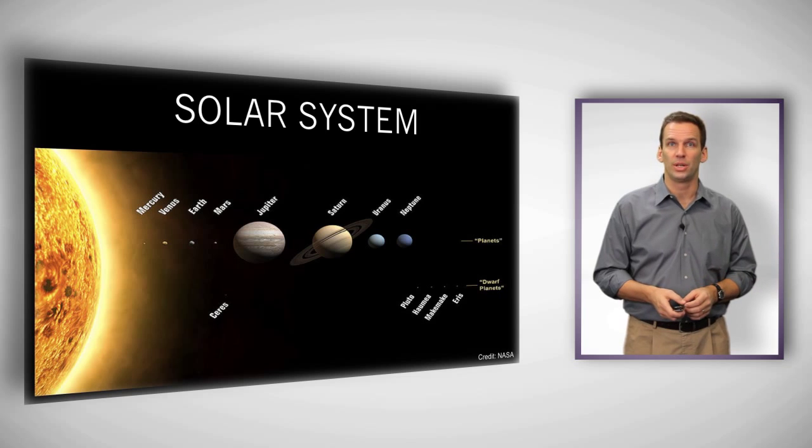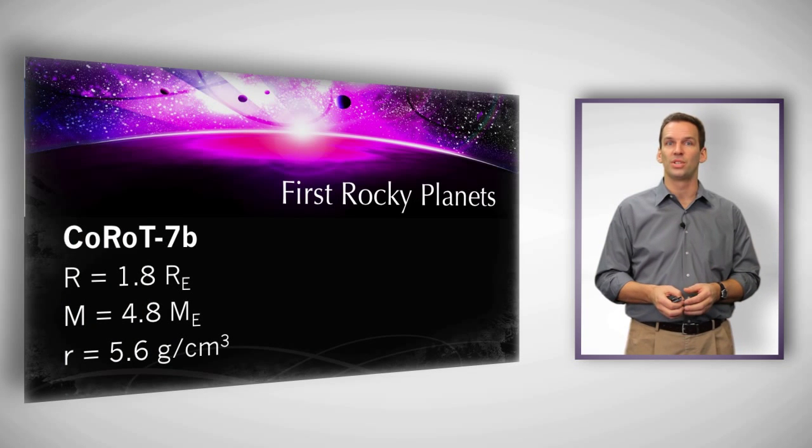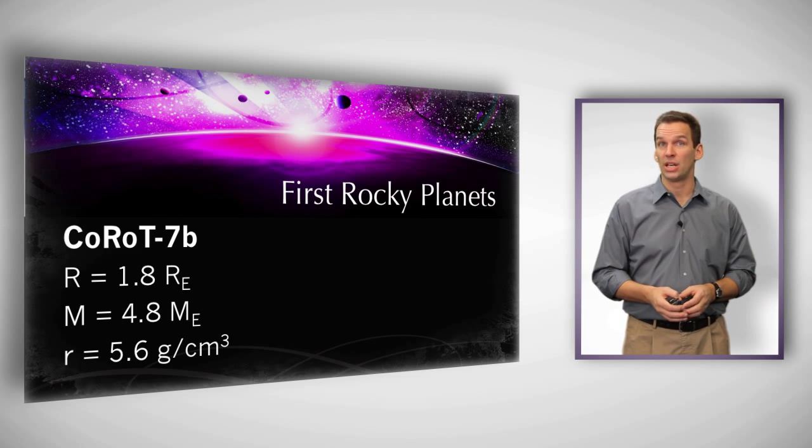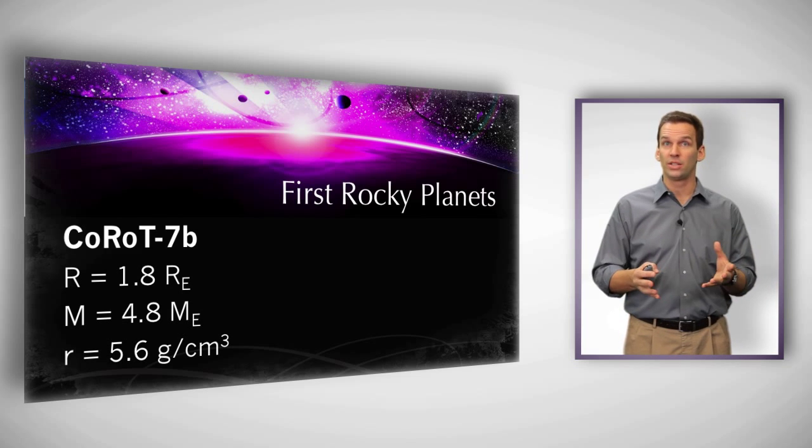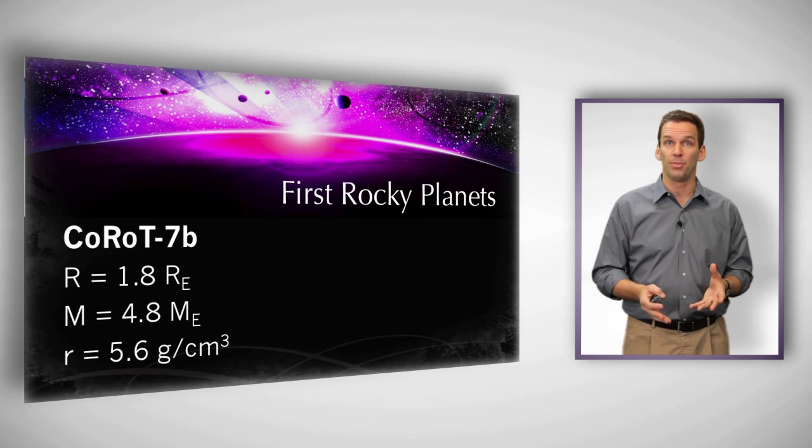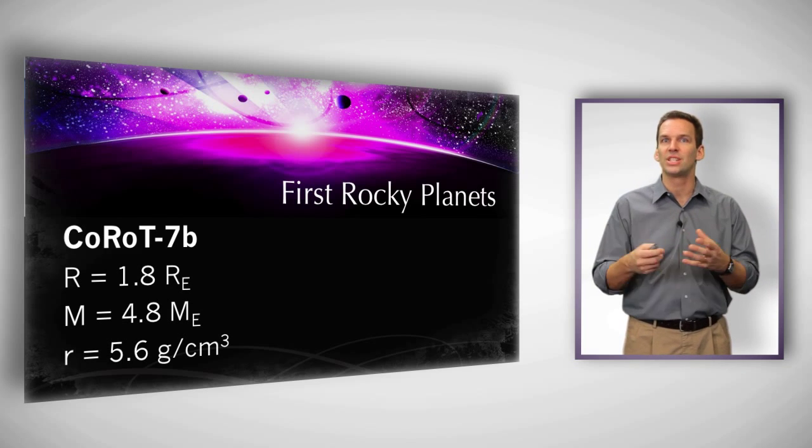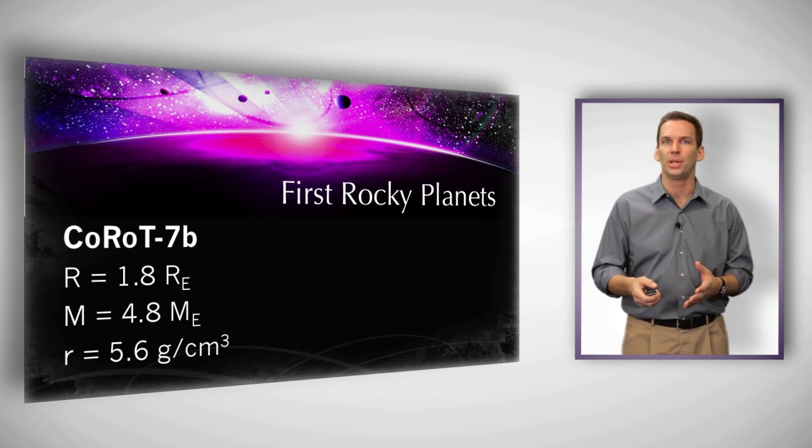One of those, a planet called CoRoT-7b, astronomers found had a radius 80% larger than that of the Earth, and a mass that was about five times that of the Earth, which gave it a density of 5.5 grams per cubic centimeter. And for comparison, Earth's density is right at 5.5 grams per cubic centimeter. So it's very similar density. So it seems like we're beginning to find rocky planets.